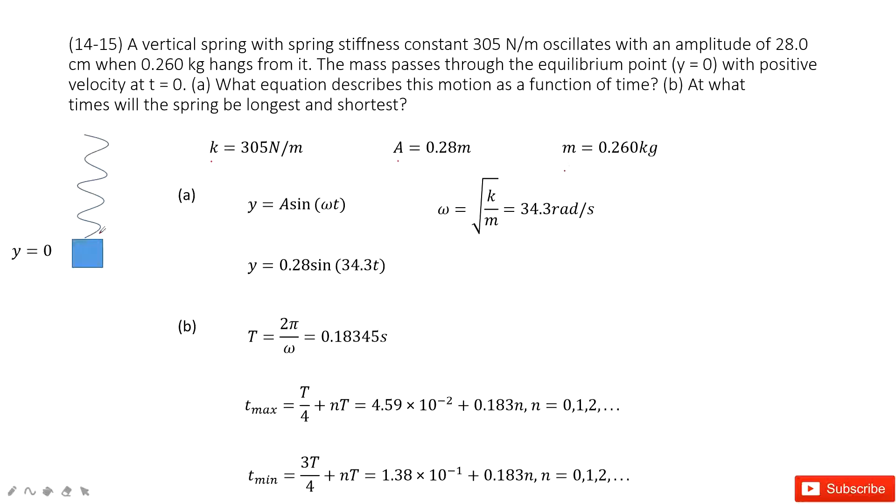So first one, we consider when it has the mass, this position as y naught. So that means at the initial, at time t equal to 0, the position is 0 and it is just at the balanced point.